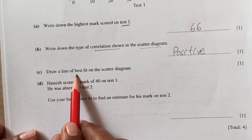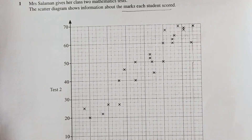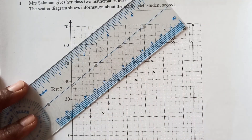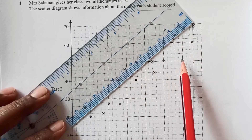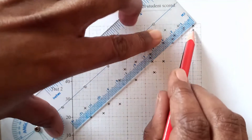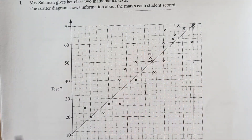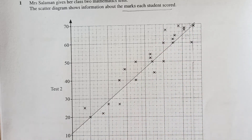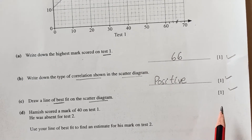Now draw a line of best fit on the scatter diagram. The line of best fit does not have to pass through the origin. You should draw a line where the maximum number of points are close to it — they don't all have to be on the line, just nearby. Adjust the line so the most points are near it. That gives us up to three marks.